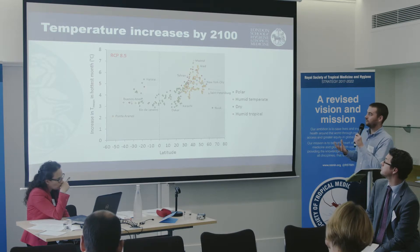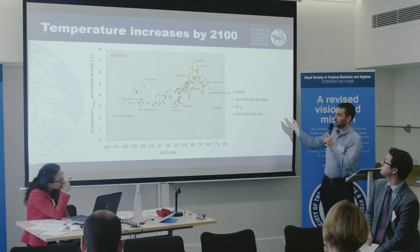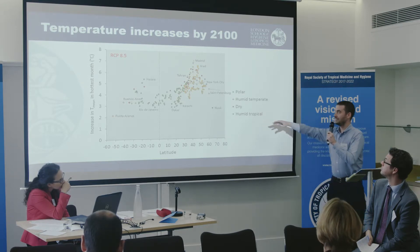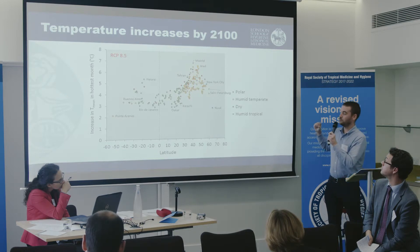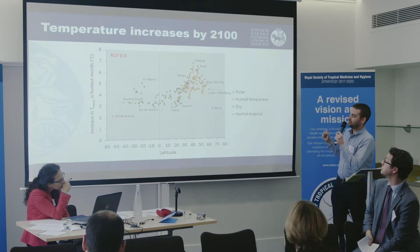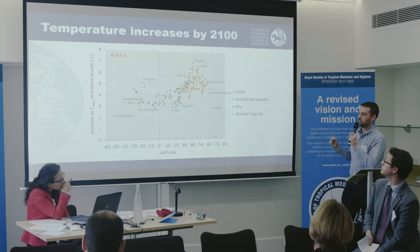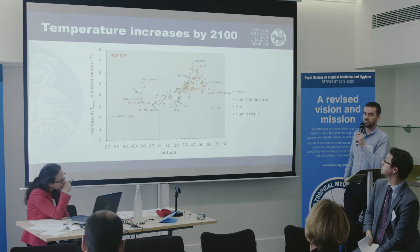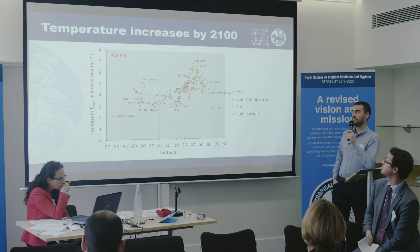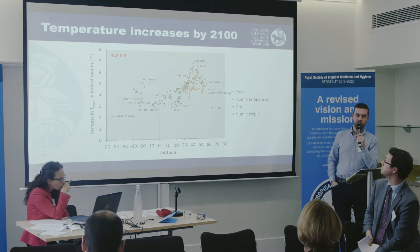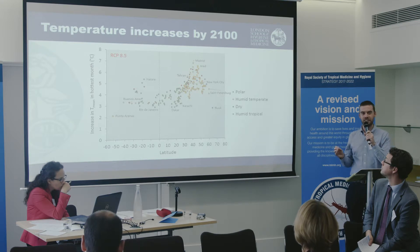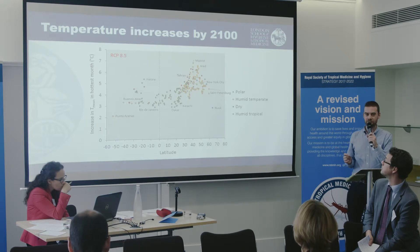I've grouped the cities by their ecoregion. The cities towards the top are predominantly drier and humid temperate cities. For example, somewhere like Madrid will see their average temperature in the hottest month be 7 degrees warmer than it already is. In some of these cities, that takes the average daily temperature — not the maximum — in the hottest month to above 40 degrees.